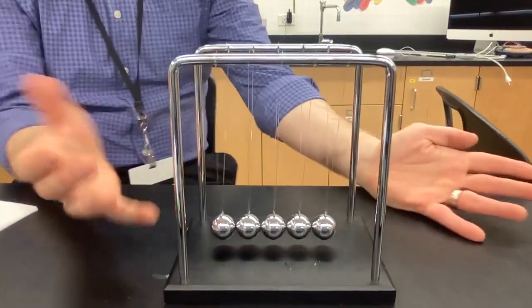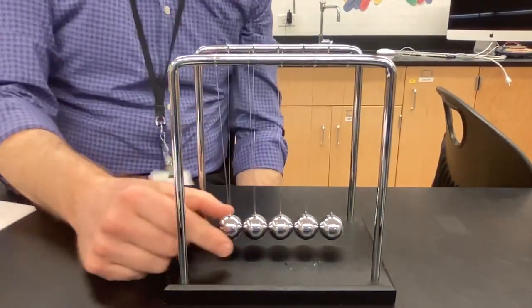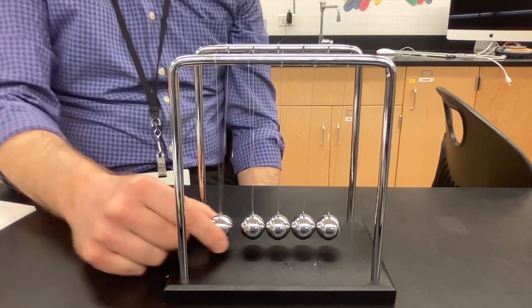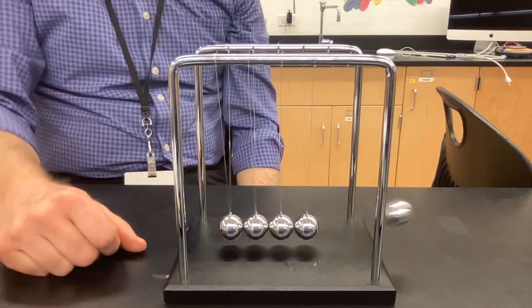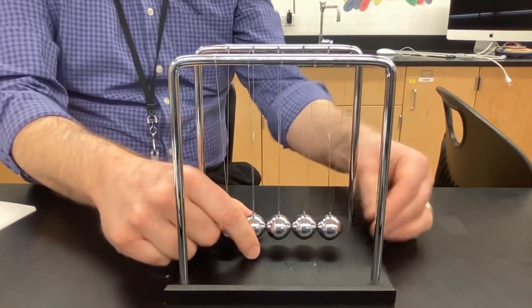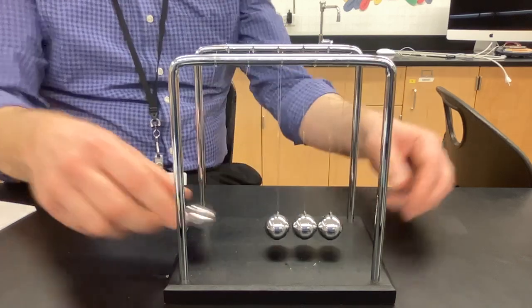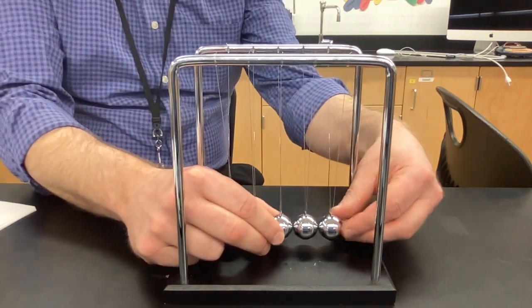I have this thing here, you've probably seen this before, it's called a Newton's Cradle. It's pretty fun if you take one of the spheres back, you can get one sphere to go back and forth. If you take two of the spheres back, you can get two spheres to go back and forth.